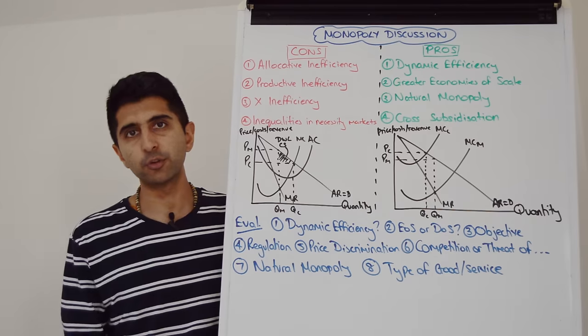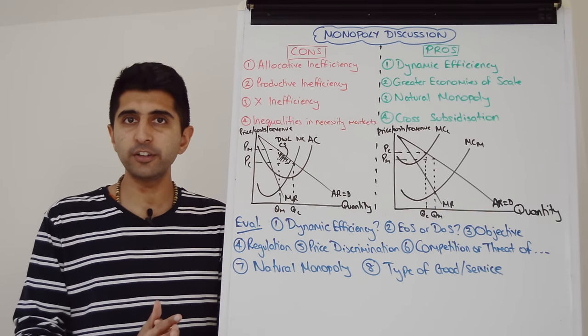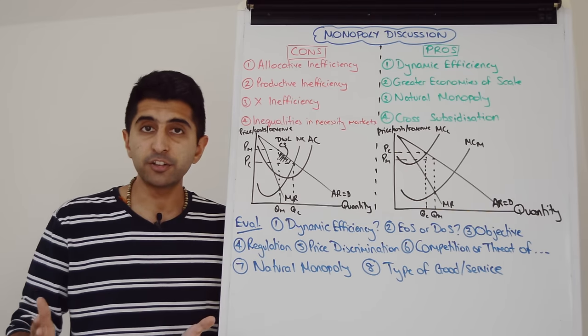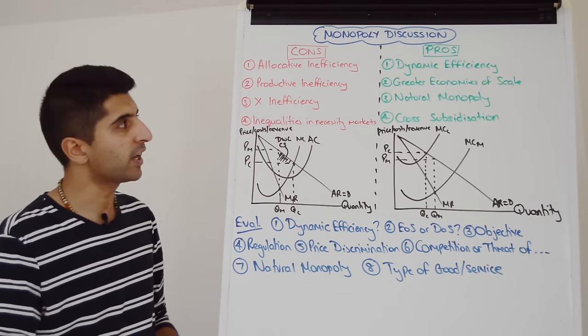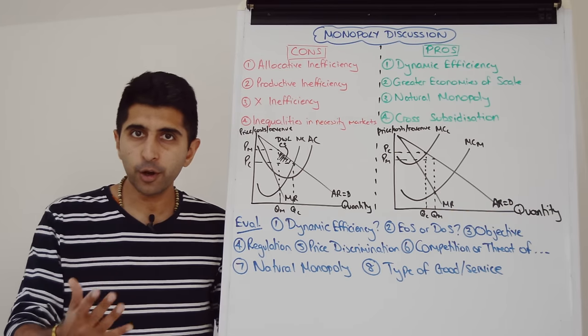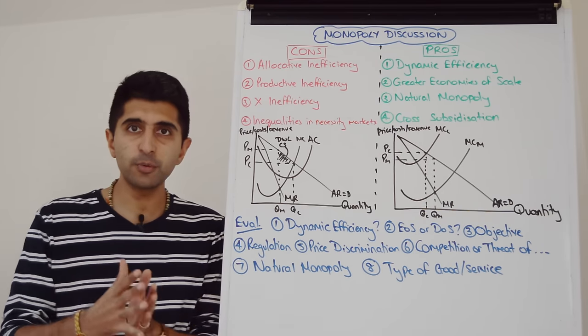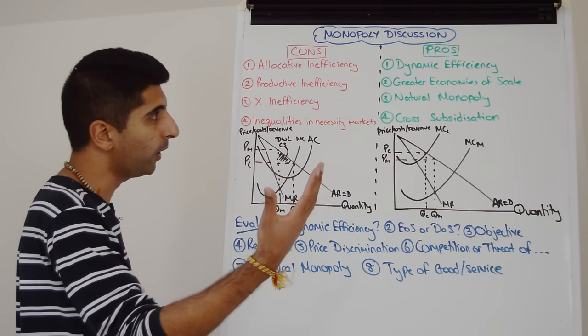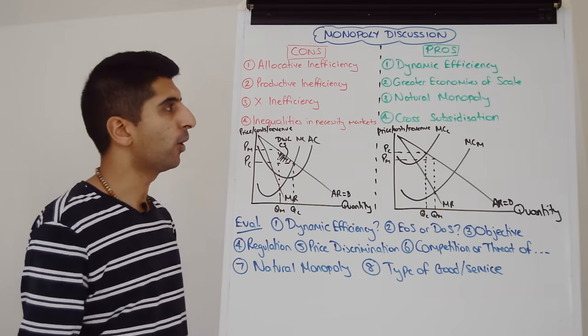But it's also good for producers who are able to maybe patent any new technologies and keep earning those profits over time. They could gain market share by being able to beat rivals through their innovations over time. Better technology can also lower costs over time. So it's good for both consumers and producers if there is dynamic efficiency taking place. And that could well be due to the profits that monopolies make.